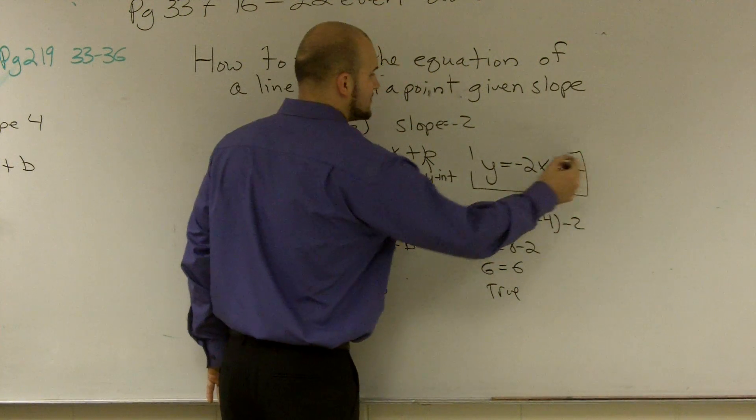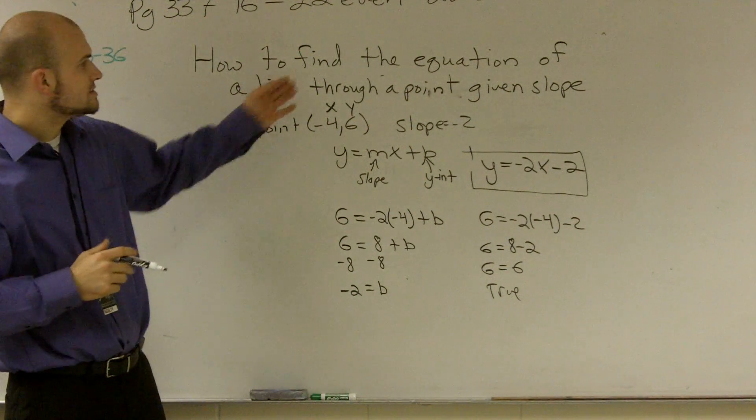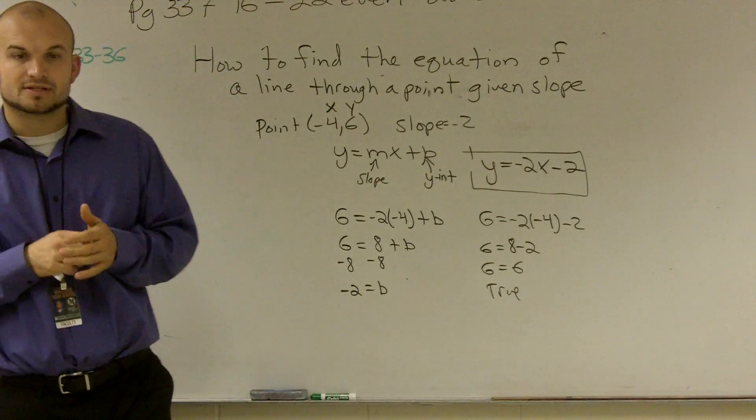Here's my equation given a slope of negative 2 through the point negative 4 comma 6. So that is how you find an equation of a line through a point given the slope.